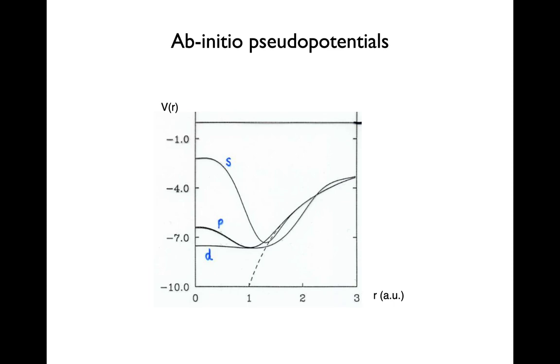So in the end, what we get out of this procedure is what is called an ab initio pseudo potential. Its main features are that first, when you get away from the core region, it should go into the Coulomb part, the Coulomb form. Also,